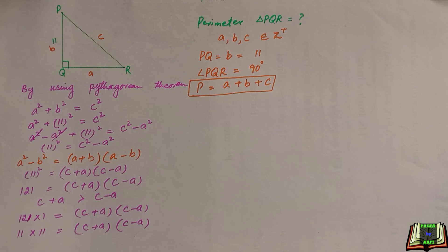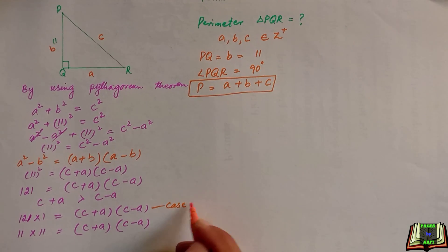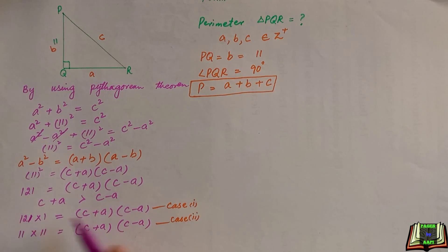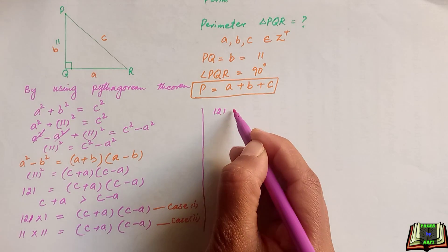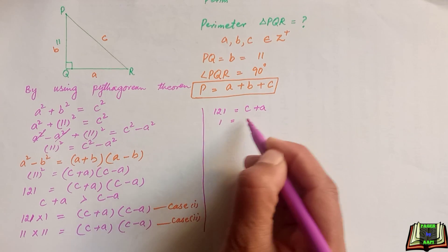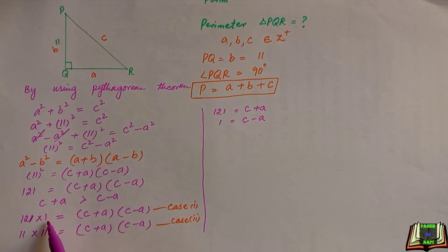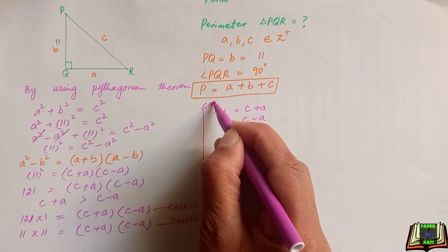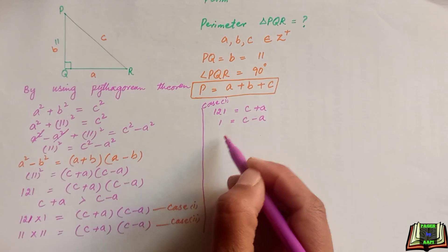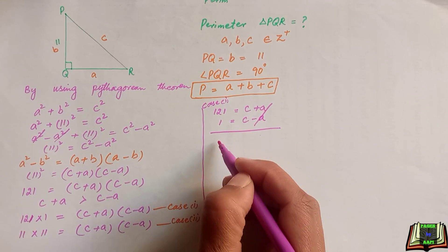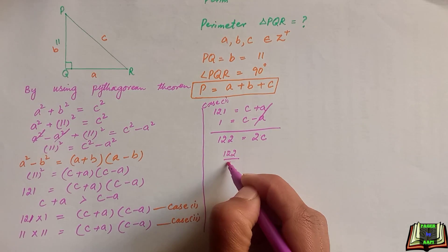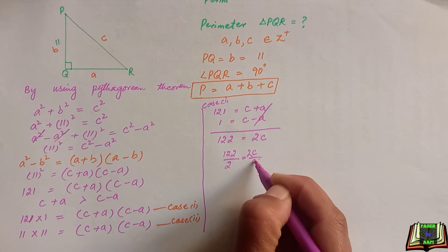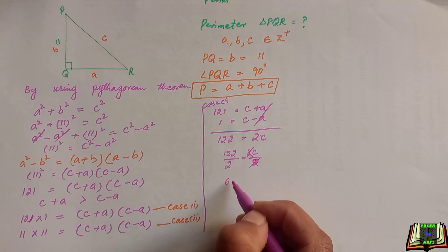Let's name this as Case 1 and Case 2. We are going to simplify both cases one by one. First, Case 1: 121 equals C plus A, and 1 equals C minus A. From here we can see that 1 equals C minus A. Let's add these two equations — the A's cancel out — giving us 2C equals 122. Dividing both sides by 2, the 2's cancel out and we have C equals 61.